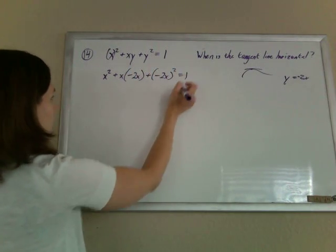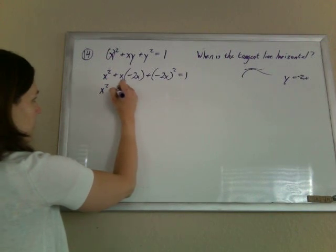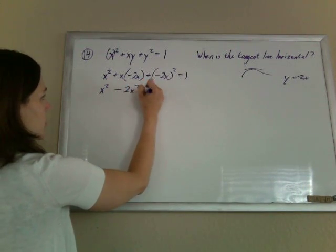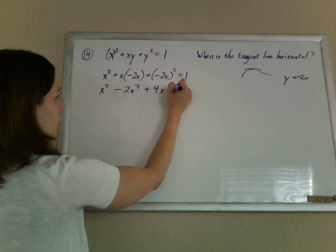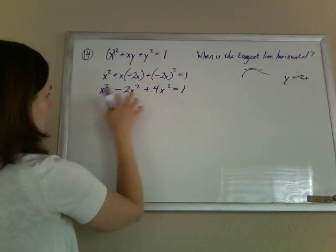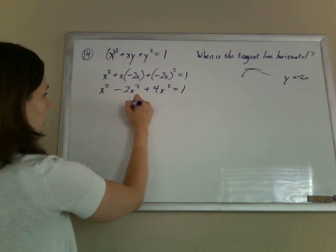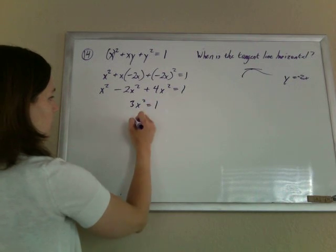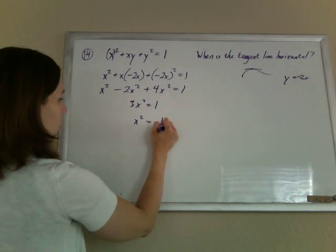So x squared minus 2x squared plus 4x squared equals 1. So that's 3x squared equals 1. So x squared is 1/3.